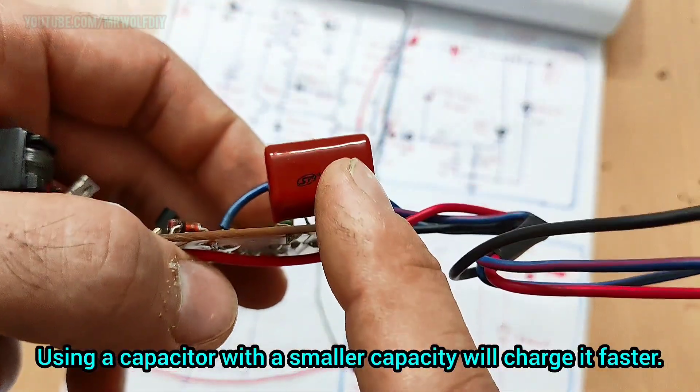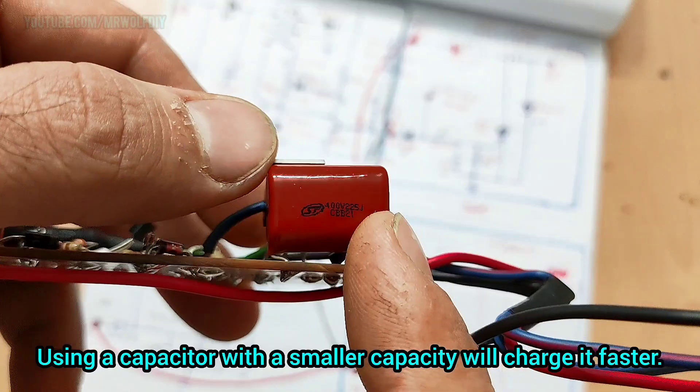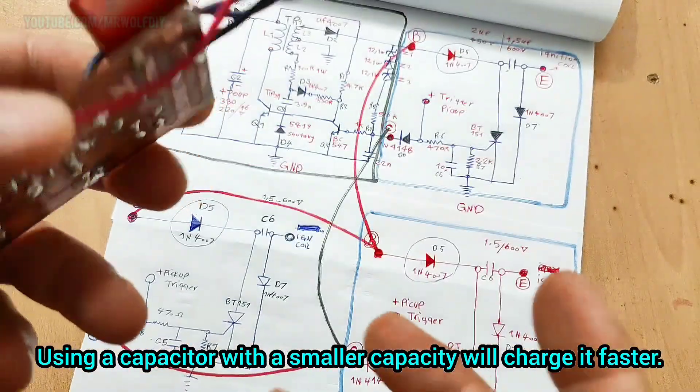And for faster C6 capacitor, you can use lower value capacitor like 1 microfarad 300 volts.